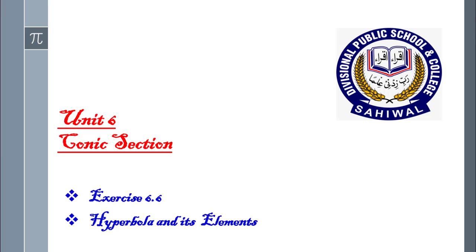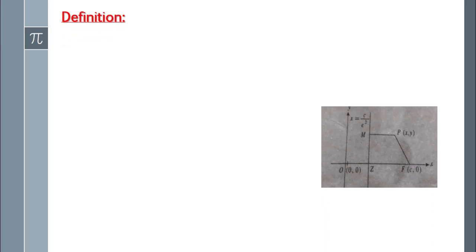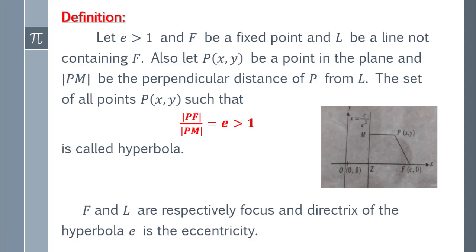Now let us see what is a hyperbola and its definition. Students, kuch cheezein jo aapne parabola mein bhi discuss ki thi, zara unko revise kar lete hain taake ye definition aapko achche se samajh aaye. Yahan pe aap dekh rahe hain: 'e' is known as eccentricity, 'f' is known as focus, and 'l' is directrix which is a fixed line. Eccentricity hoti hai, l directrix hoti hai jo ek fixed line hoti hai, aur f ek fixed point hota hai.